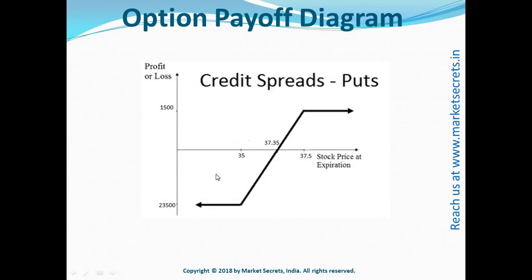To understand this, let's look at the payoff diagram for a credit spread. If the stock price stays above a particular value — even if it goes to infinity — your profit remains the same. If the stock goes below that value, it indicates a loss, and once it breaches a specific lower value, your loss remains the same. Both your upside and downside are capped — that is the beauty of this strategy.